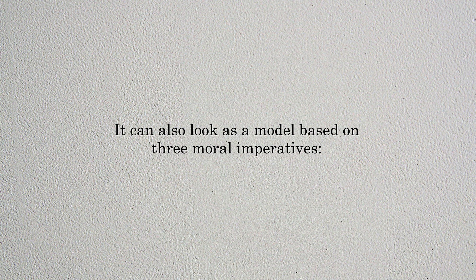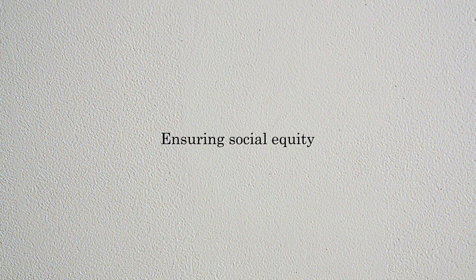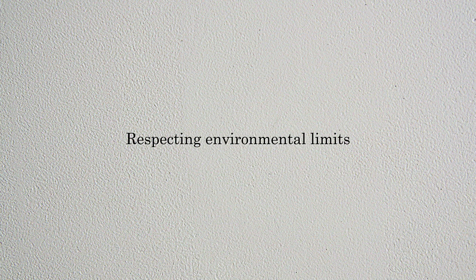This basic three-pillar model can also be viewed in terms of moral imperatives. The economic pillar can be looked at as satisfying human needs. The social pillar relates to ensuring social equity and equality. And the environmental pillar means respecting the environment and its limits — maintaining a harmonious relation between environment and nature. In this way, we can understand this basic model of sustainability.